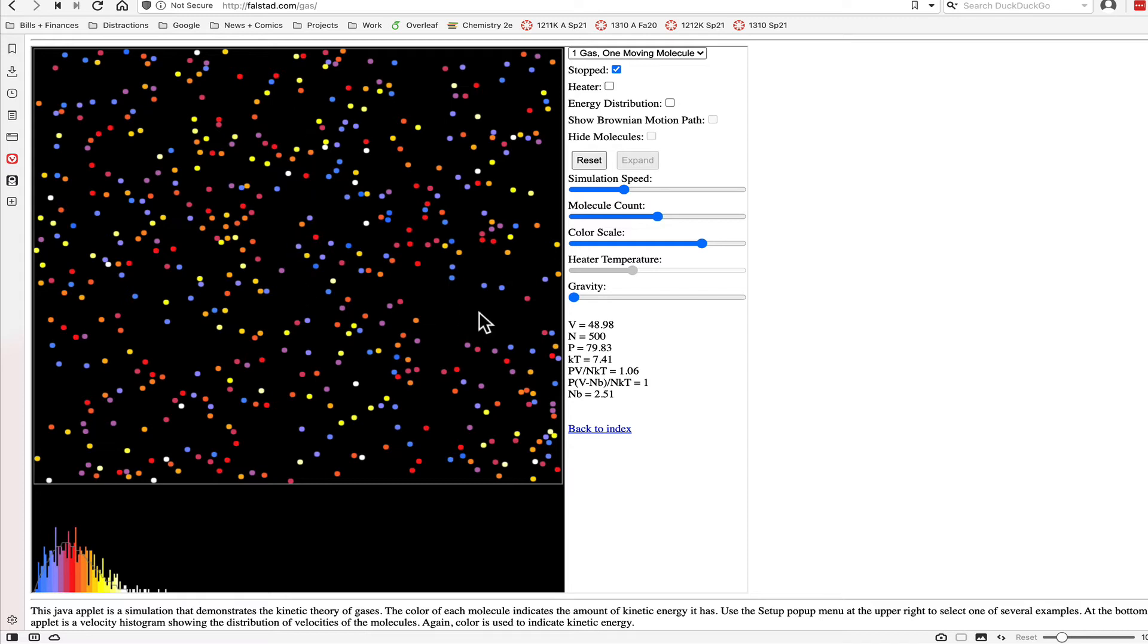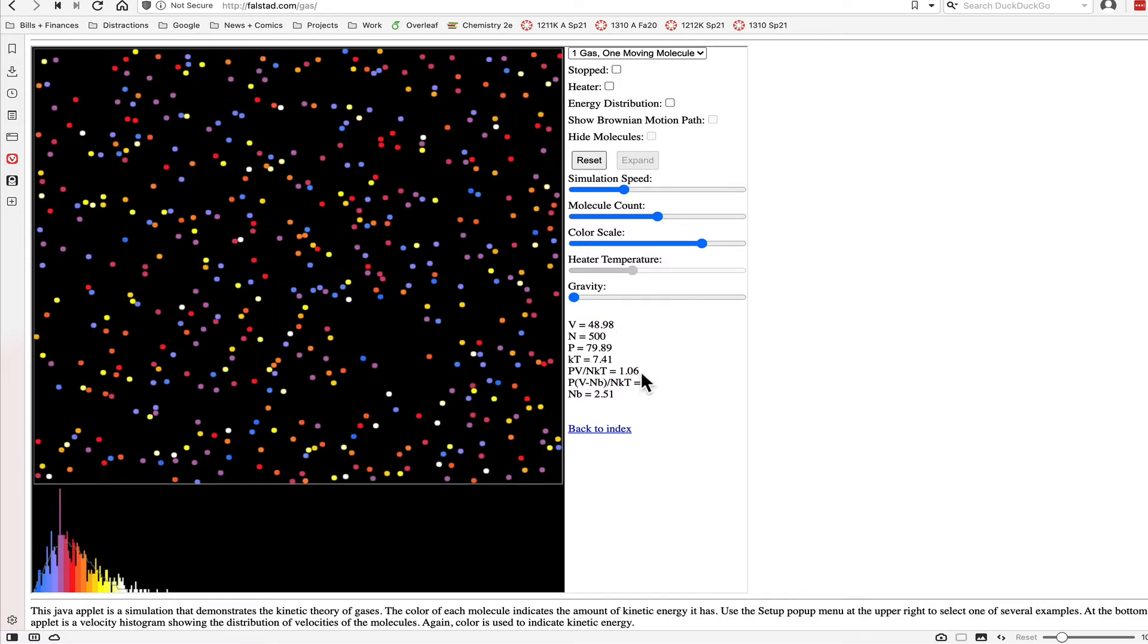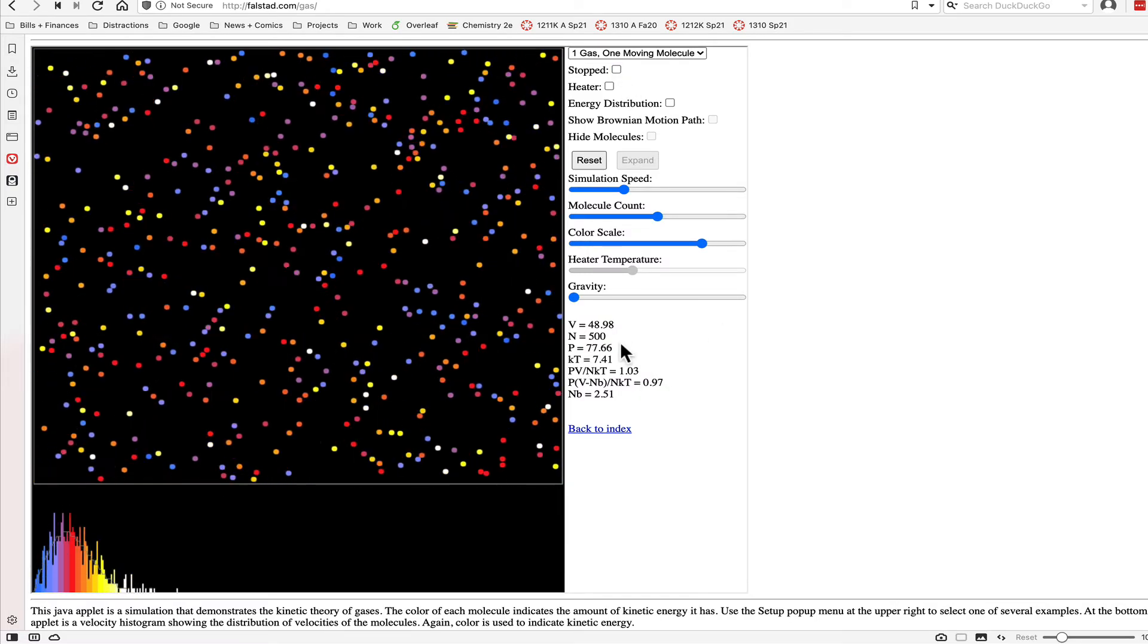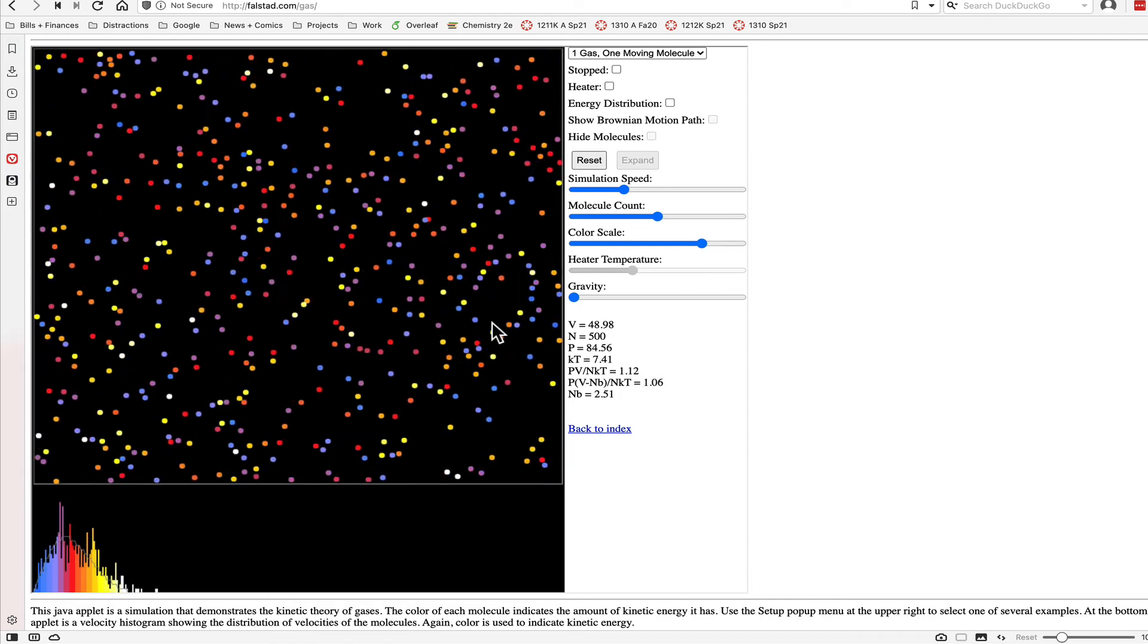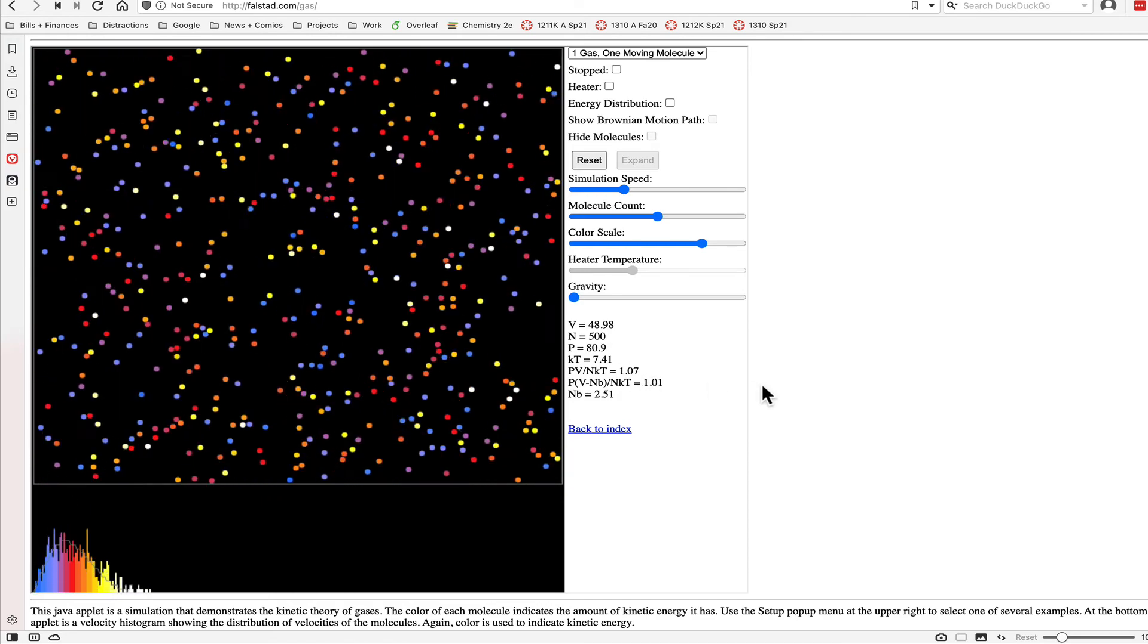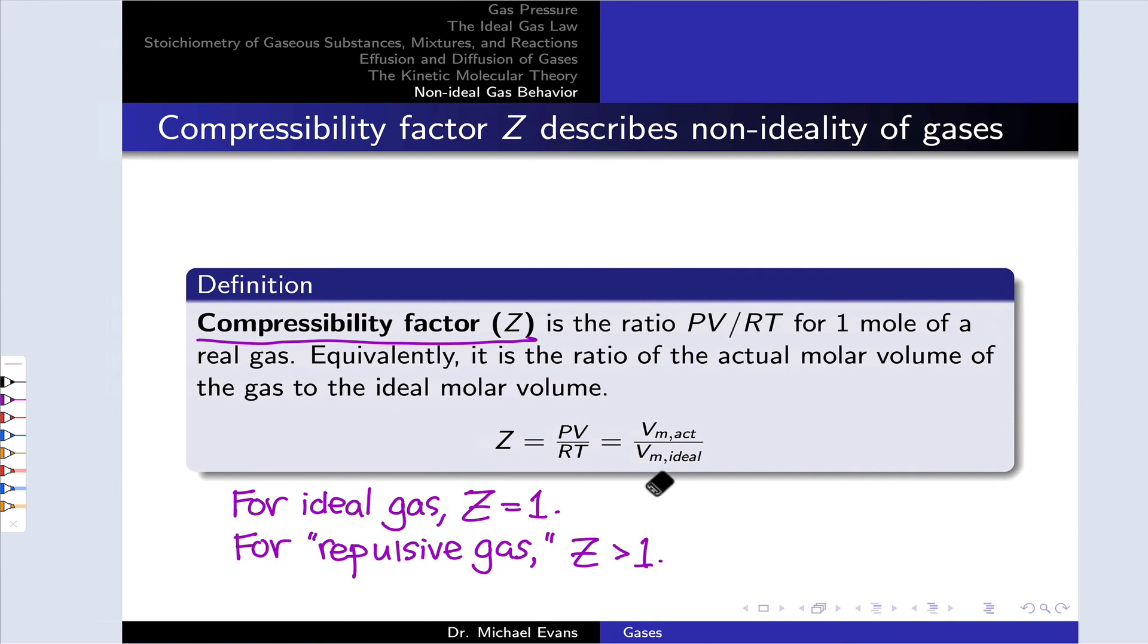And so there are repulsive forces. This increases the molar volume and causes PV divided by NKT to be slightly greater than 1 in this simulation. We could get this closer and closer to 1 if we shrunk those particles down to smaller and smaller size.